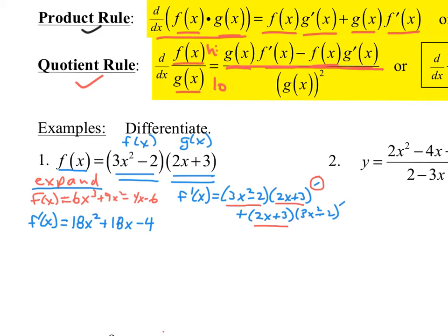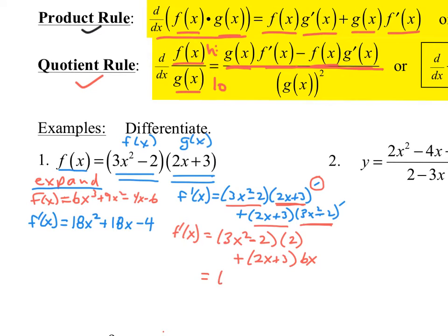The second term is the second times the derivative of the first. So if I simplify this for f prime of x — the derivative of 3x squared minus 2 applied — this would be 3x squared minus 2, and then the derivative of 2x plus 3 would just be 2. Plus 2x plus 3, and the derivative of that first piece would be 6x. Simplifying: 6x squared minus 4 plus 12x squared plus 18x, and we get the same exact answer as when we expanded it.